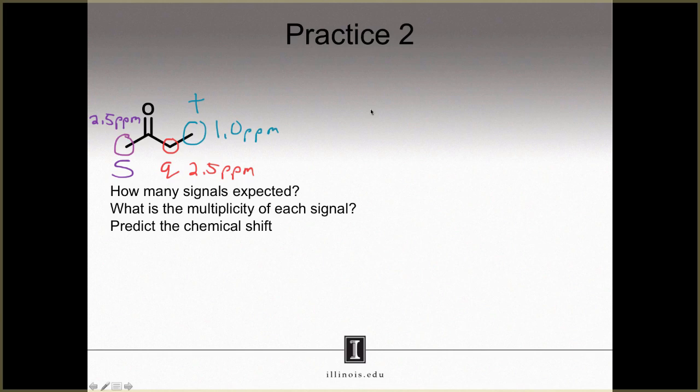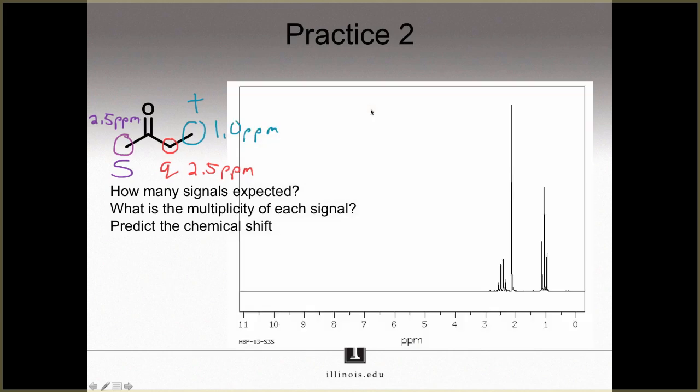Now let's see how our predictions match reality. The purple protons should appear as a singlet at roughly 2.5 ppm. Is there such a signal in that area? Yes, there is. I have a singlet at roughly 2.1 ppm. My prediction was pretty close. My red protons should be a quartet at roughly 2.5 ppm. How did we do there? Pretty good, actually. There's a quartet at almost exactly 2.5 ppm. What about the blue protons? I should see a triplet at 1.0 ppm. Excellent! I see a triplet at just above 1.0 ppm. My predictions were pretty accurate.